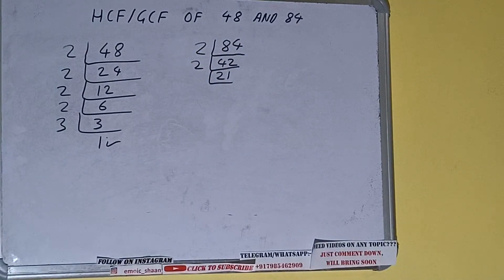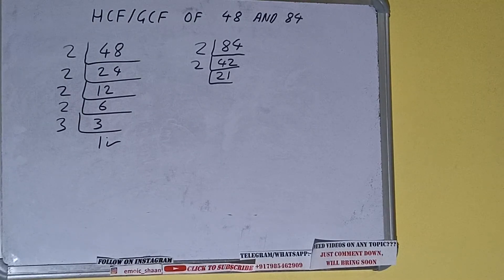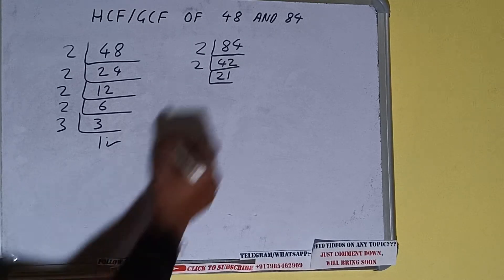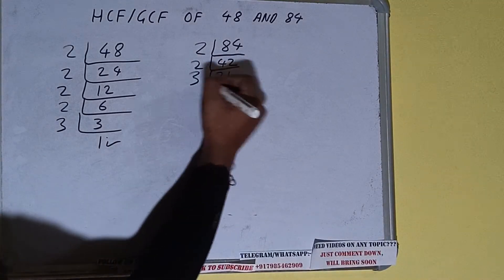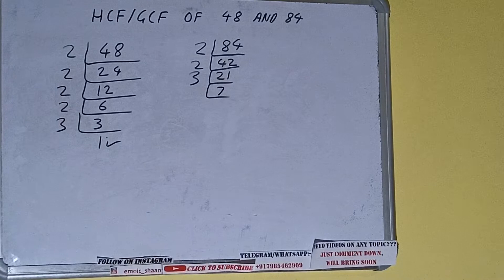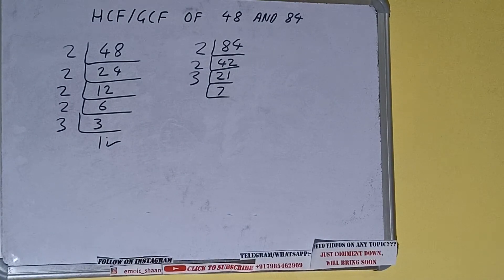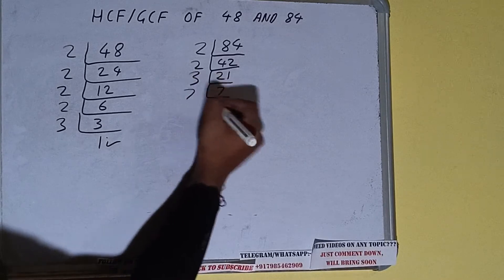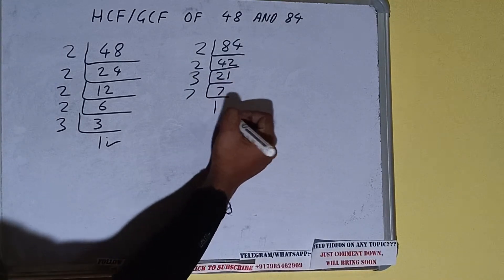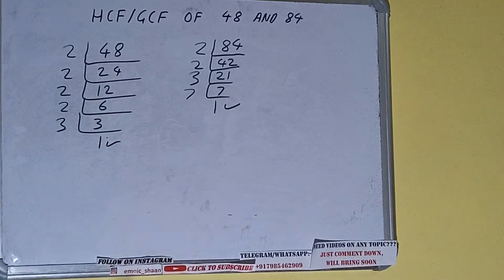21 is not divisible by 2 because it is an odd number, so we'll check with the next lowest prime number, that is 3. Is 21 divisible by 3? Yes it is, and we'll be having 7. 7 is not divisible by 3, and on top of that 7 is also a prime number, so it is only divisible by itself, that is 7. Once we do so we'll be getting 1, and once we get 1 we need to stop.